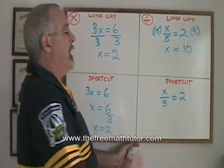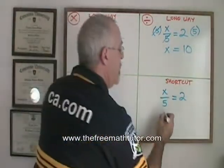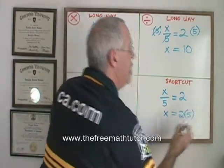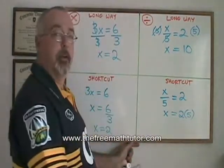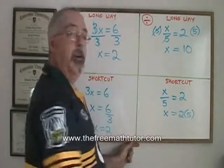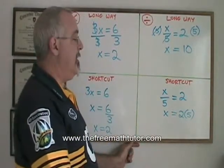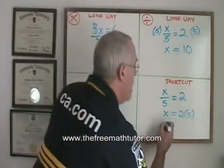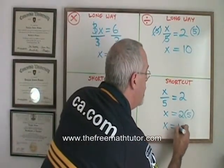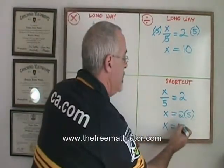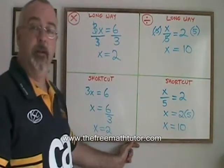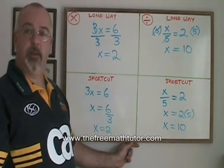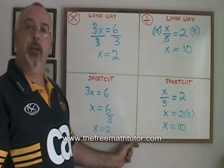With the shortcut, I will show that I am multiplying the right side by a 5, but I don't bother showing that I'm multiplying the left side by a 5. I still am multiplying both sides by 5. And x is equal to 2 times 5, which is 10 — the correct answer, and the same answer. This is how we use our basic algebra shortcut for multiplication and division.